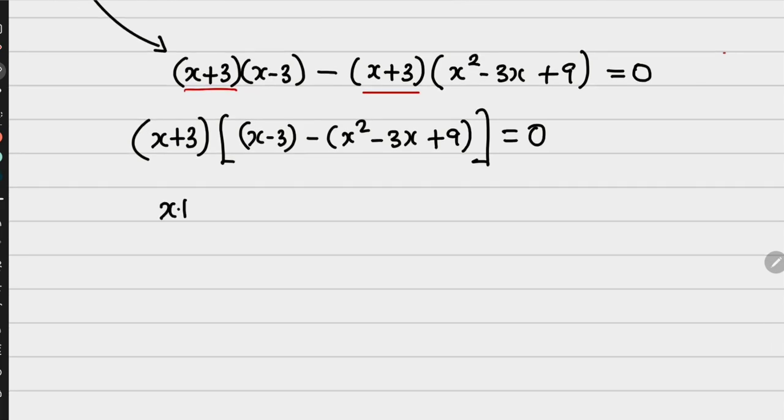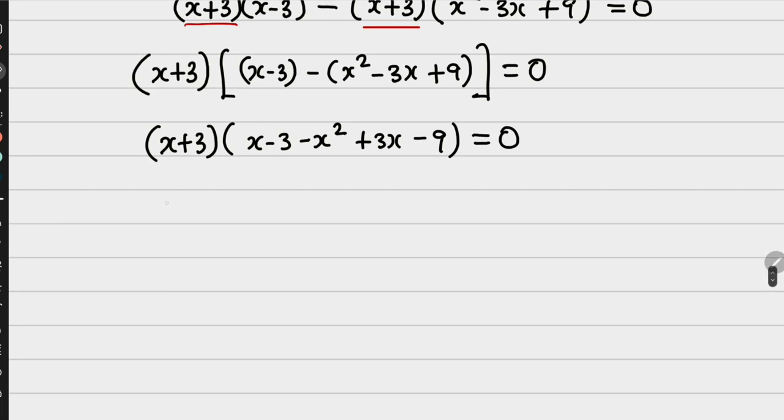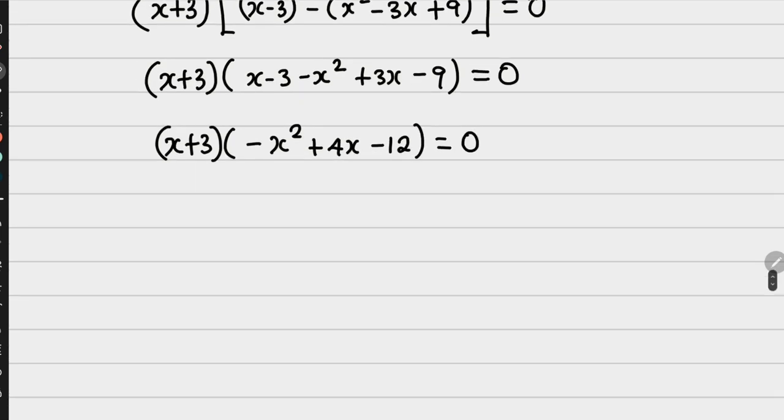Now I can factorize further because I have x plus 3 and I have x plus 3 here, so that I'm going to have x plus 3 into a big bracket of x minus 3 minus into x squared minus 3x plus 9, everything is equal to 0. So, this is x plus 3 into x minus 3 minus x squared then plus 3x then minus 9, everything is equal to 0. So this is x plus 3 into minus x squared plus 4x minus 12 is equal to 0.